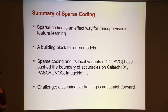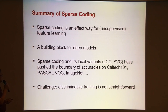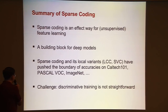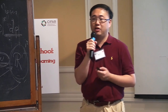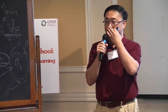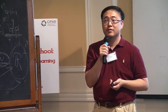In summary: sparse coding is an effective way for feature learning — at least unsupervised, and also supervised. It's a building block for deeper models. Sparse coding and its local versions have pushed the boundary of accuracy on benchmarks like Caltech 101, Pascal, and ImageNet. One challenge is that, unlike autoencoders or RBM-type algorithms, supervised training for sparse coding is non-trivial. It's necessary to develop better algorithms for supervised training.